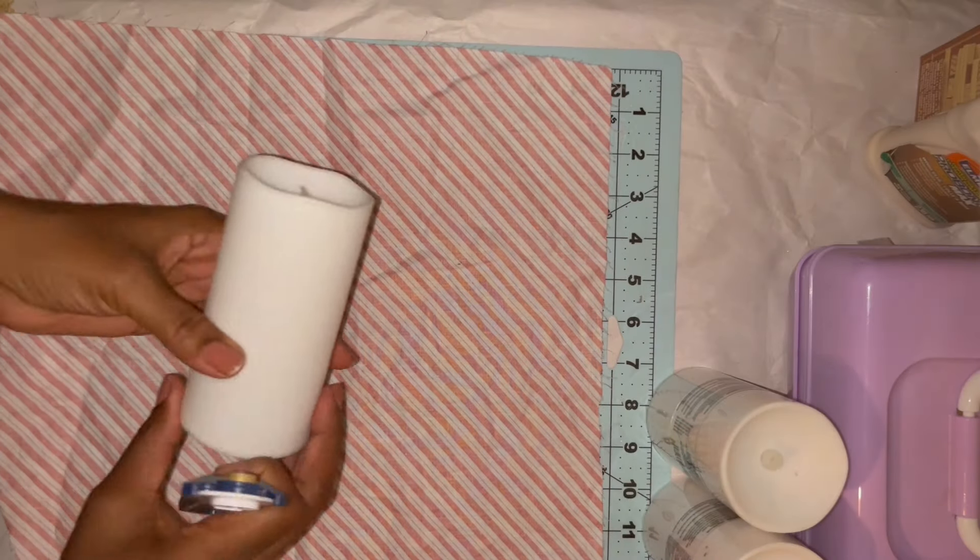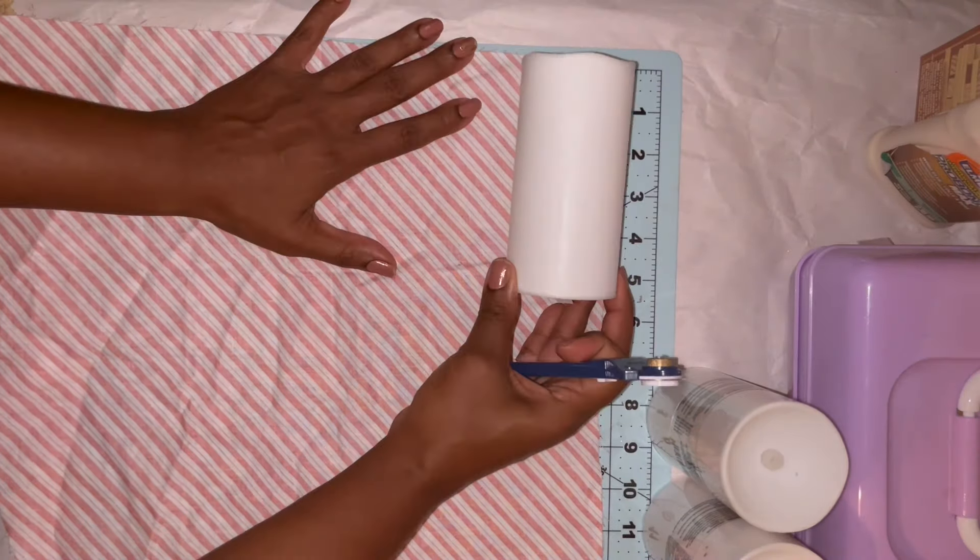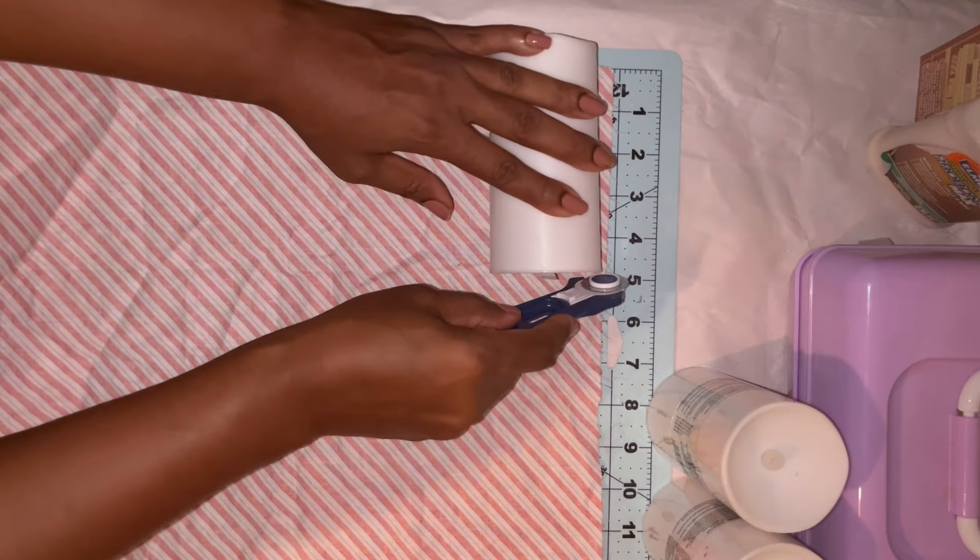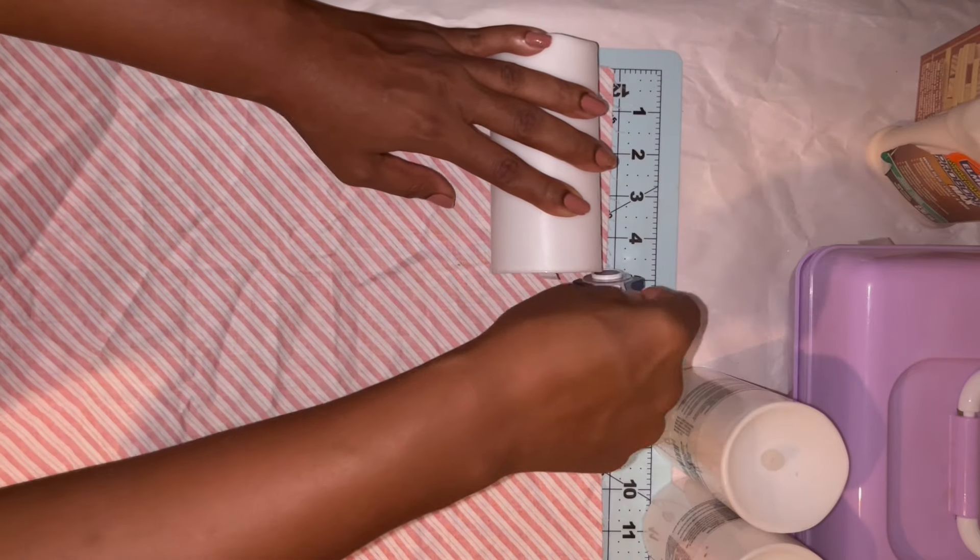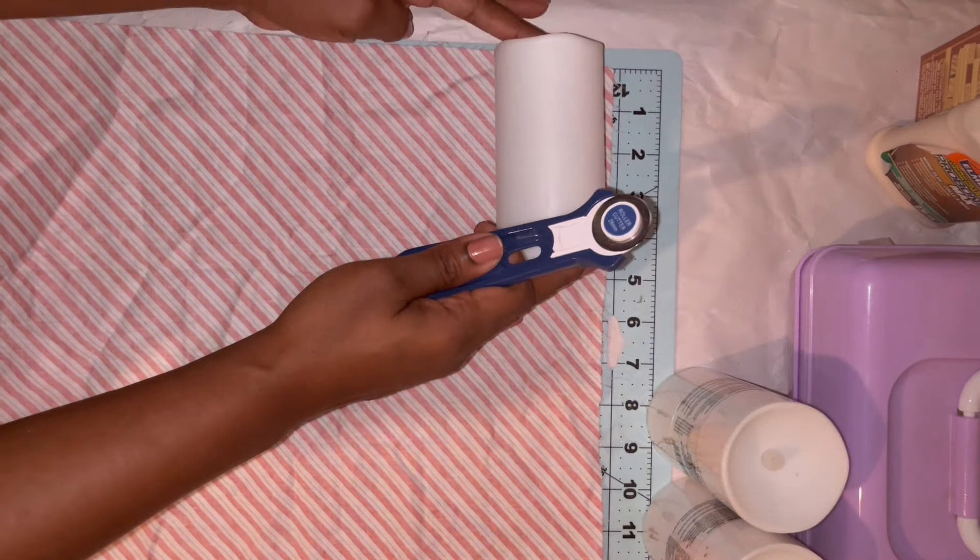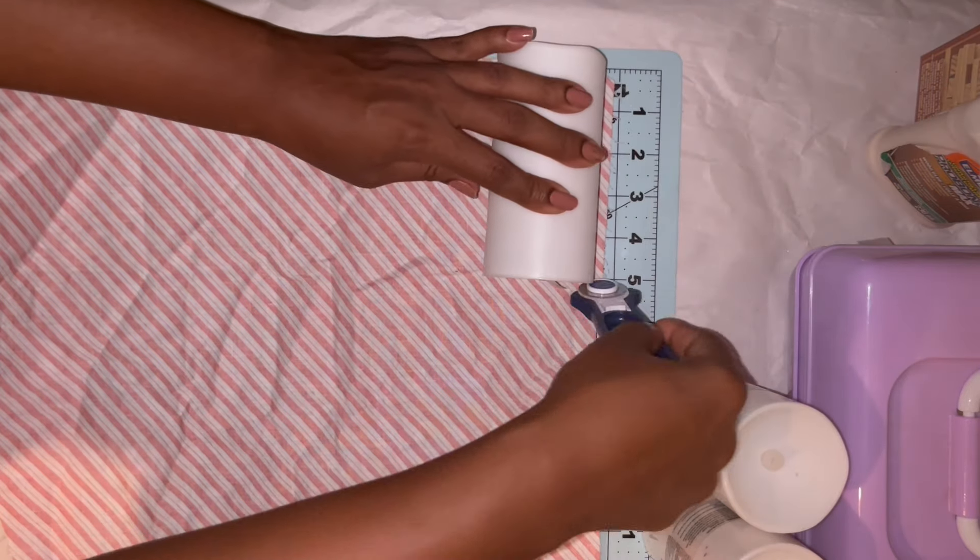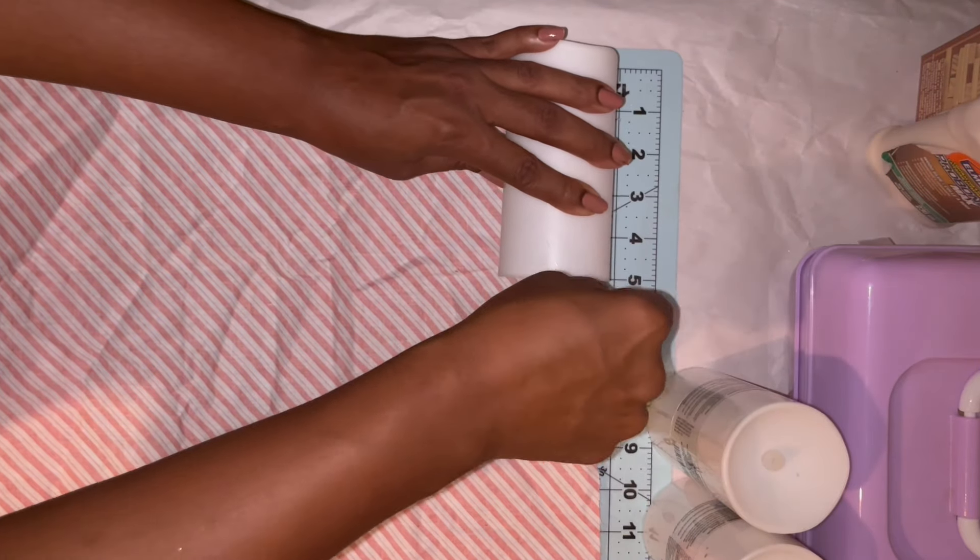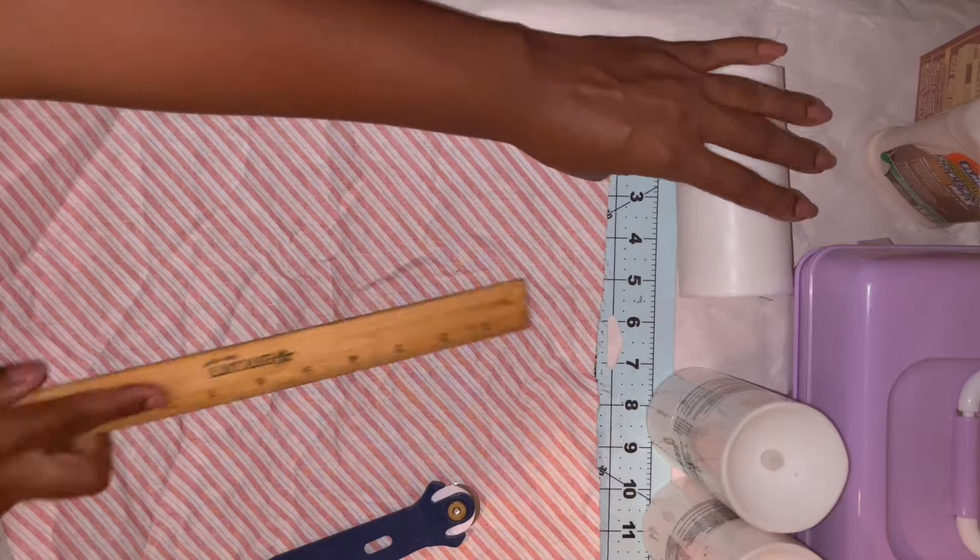So with the candle being about five inches long, I'm just going to set it against the fabric and just use this rotary tool I found at Dollar Tree. I'm just going to go ahead and just get my fabric cut into strips to make it easier to get it mod podged onto each candle.